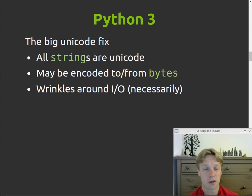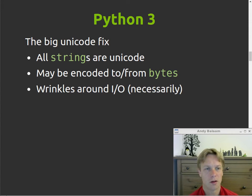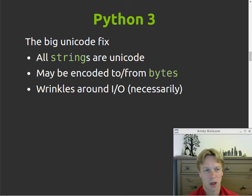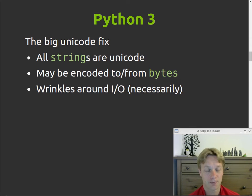Once characters are in a string object you don't care what the encoding is — they're just characters from the Unicode character set. But when you communicate with the outside world, like printing to the console, writing to a file, or doing something over the network, you need to encode those characters into actual bytes. That's what I mean by wrinkles — it's necessarily complicated. But the point is, it's made strings much, much better than they were in Python 2, tidied everything up, made it how it should be.